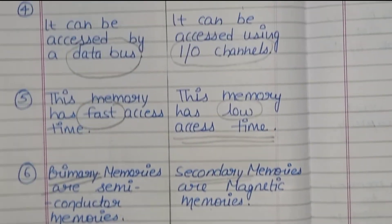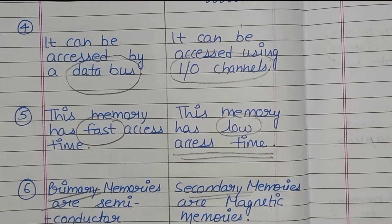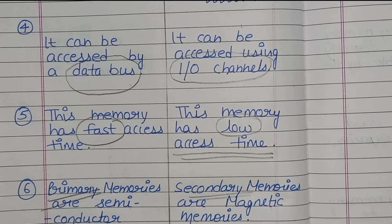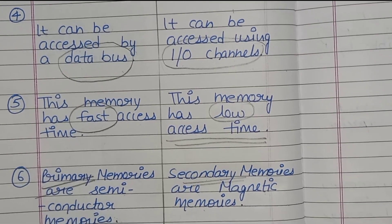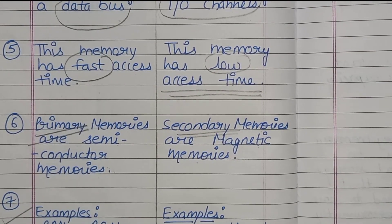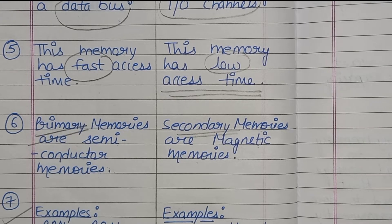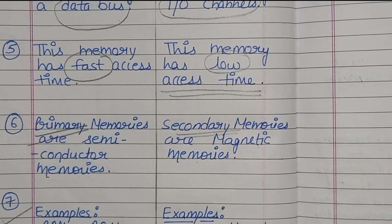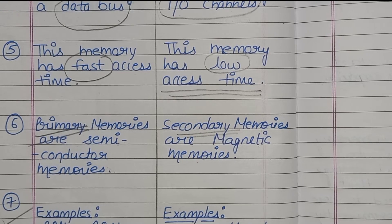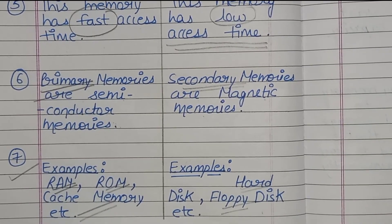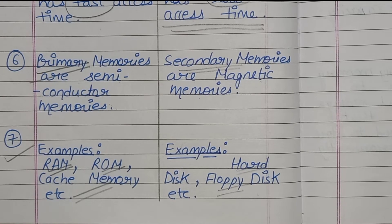To recap: primary memory is accessed by the data bus and secondary memory is accessed using input-output channels. Primary memory is fast and secondary memory is slow. Primary memory is semiconductor memory and secondary memory is magnetic memory. Primary memory examples are RAM, ROM, and cache memory; secondary memory examples are hard disk and floppy disk.